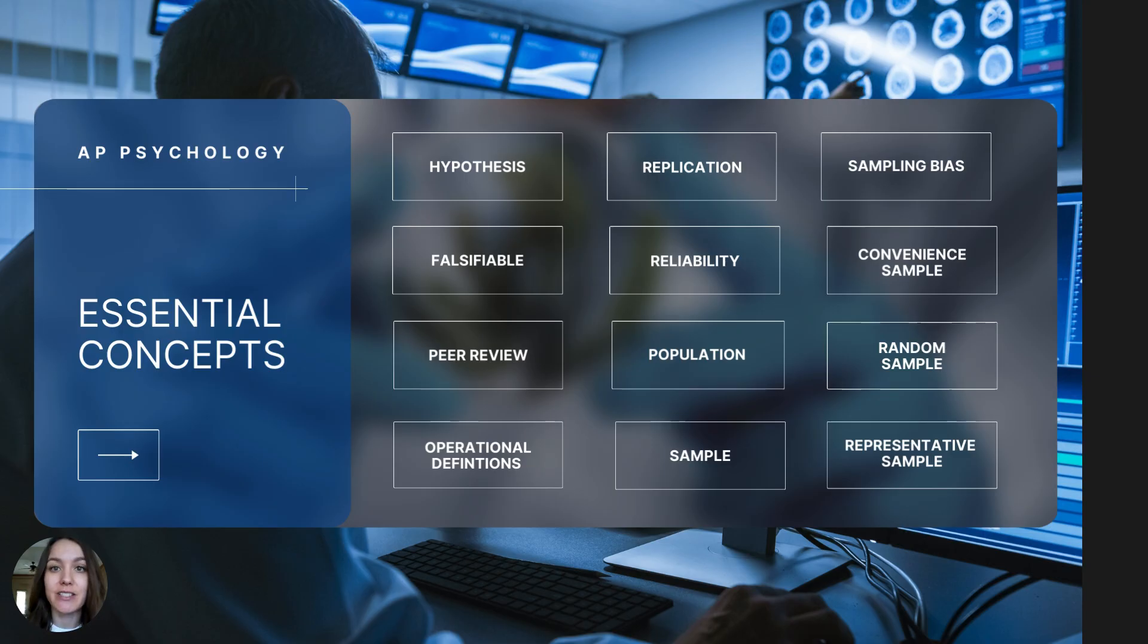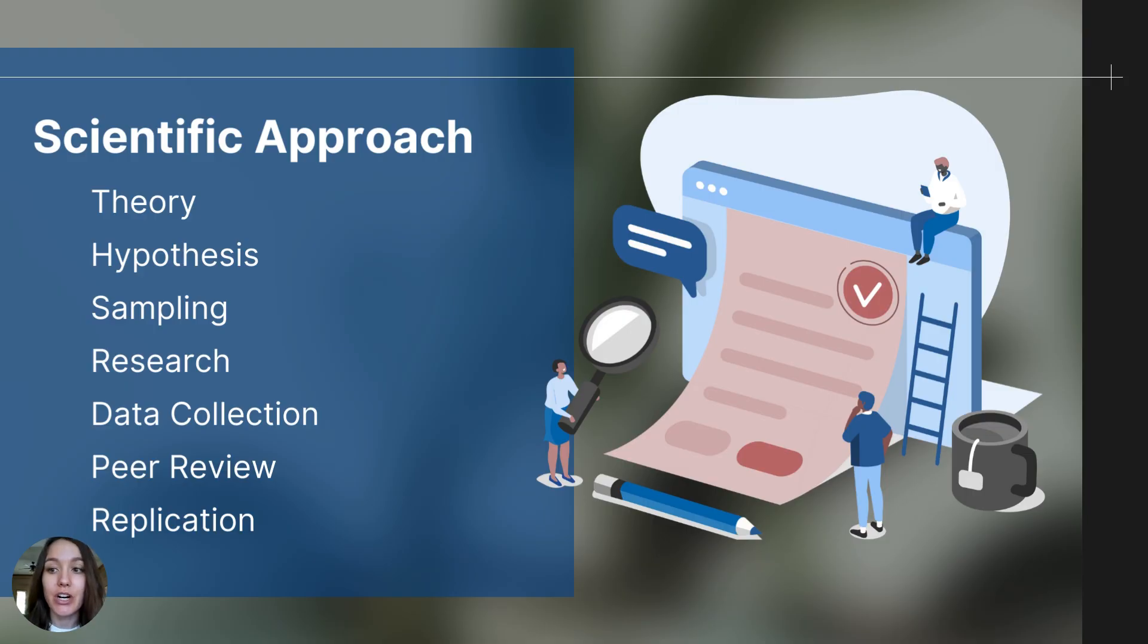You will also be able to define the following essential concepts that are listed on this screen. So to start, psychologists use the scientific method to determine whether ideas or assumptions we have about the mind and behavior are true or false. It starts with an idea or a theory and that develops into a hypothesis which can be tested.